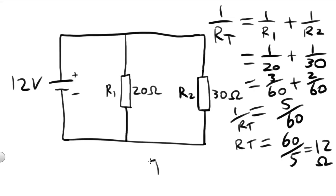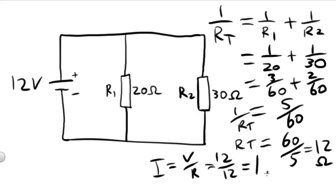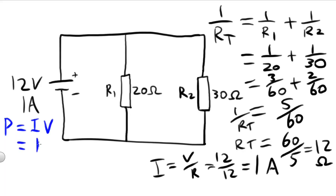The current for the circuit: I equals V over R, V equals 12, R equals 12, so the current equals 1 amp. While we're here, let's calculate the power of the circuit. P equals I times V — 1 times 12 equals 12 watts.